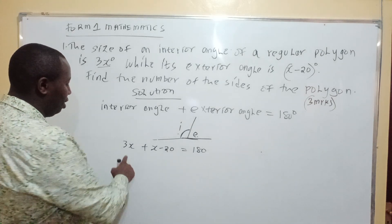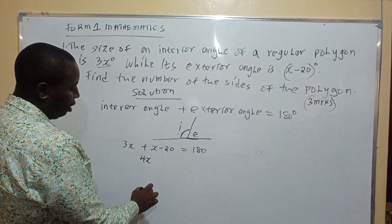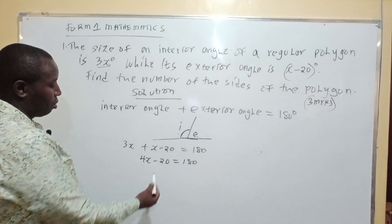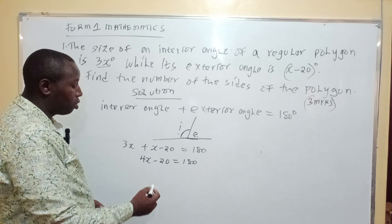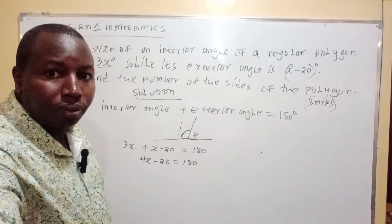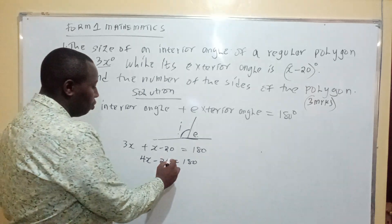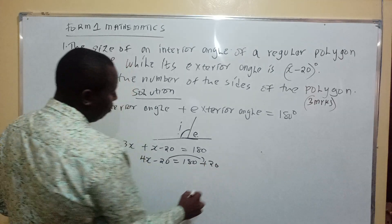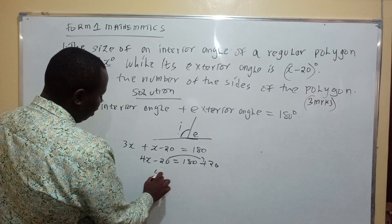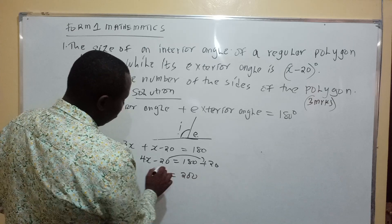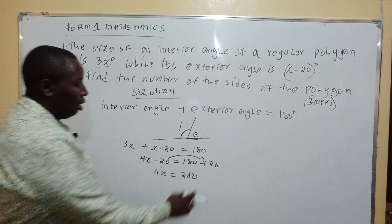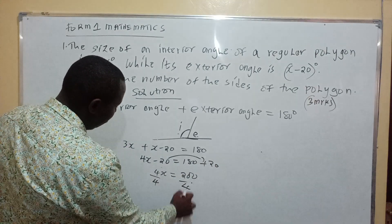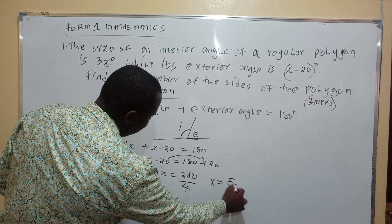So now you add 3x plus x to get 4x, then minus 20 is equal to 180. You take minus 20 to the other side, adding plus 20, so you get 4x equals 200. Then divide both sides by 4, and you get the value of x is 50 degrees.